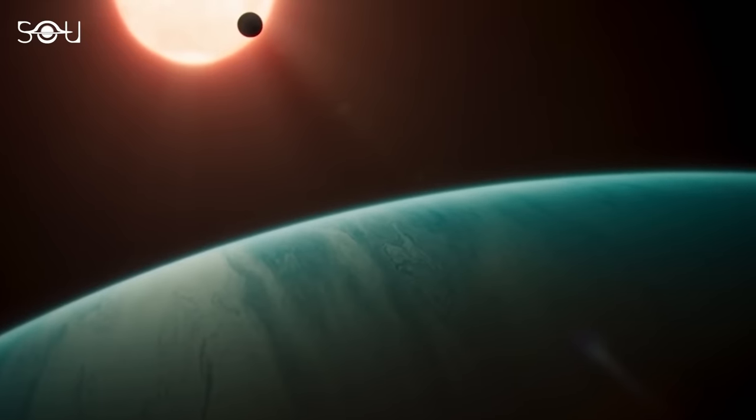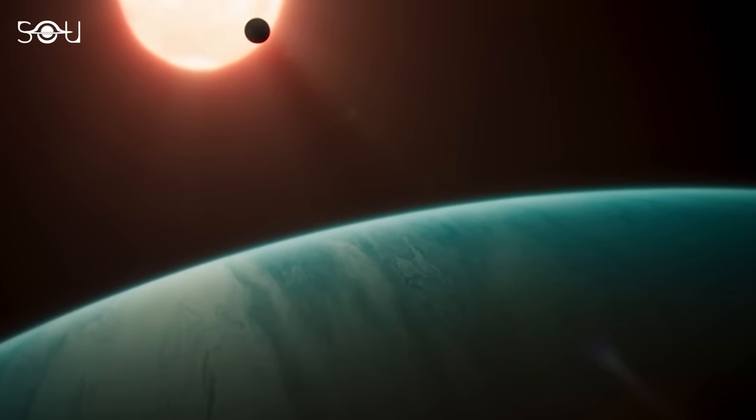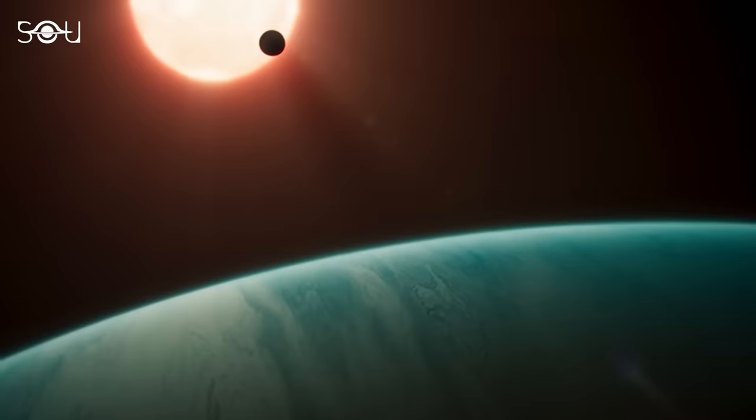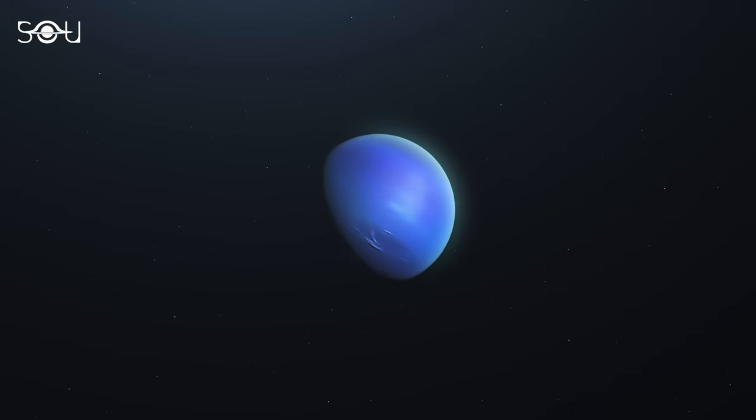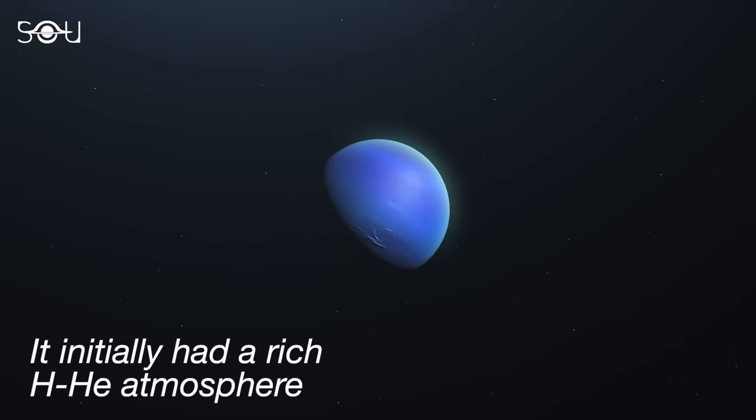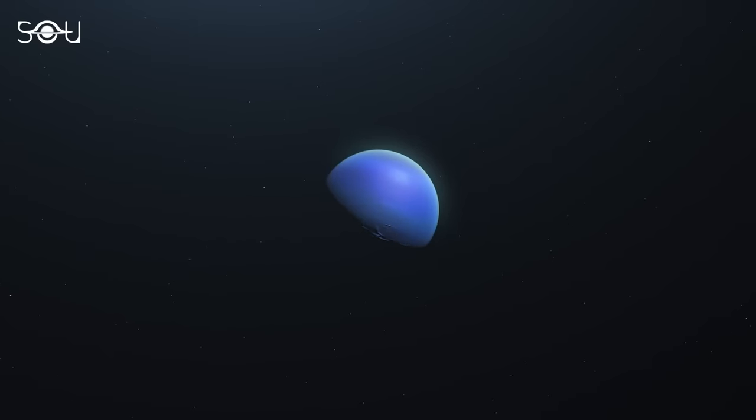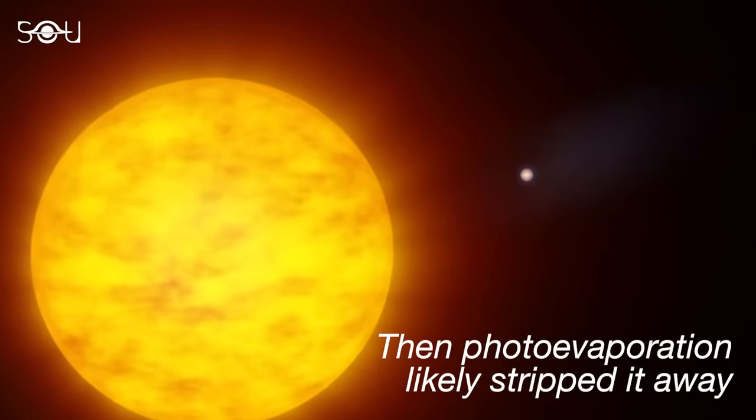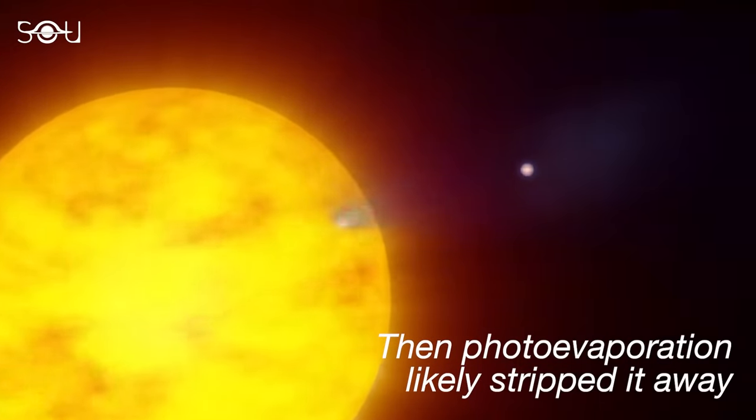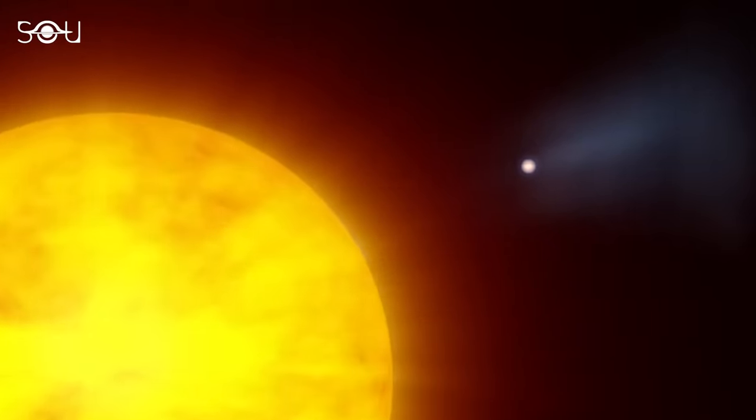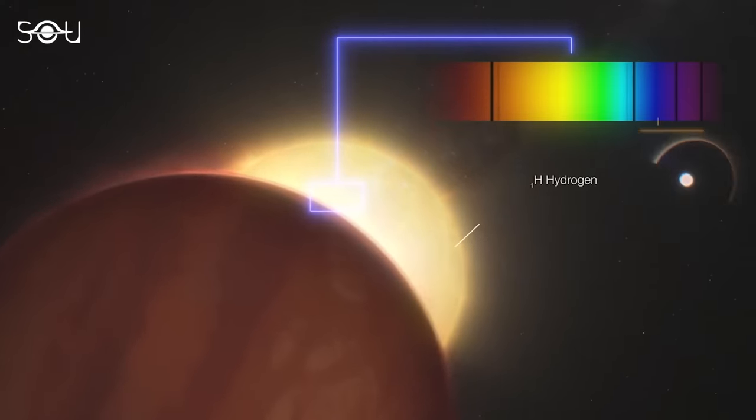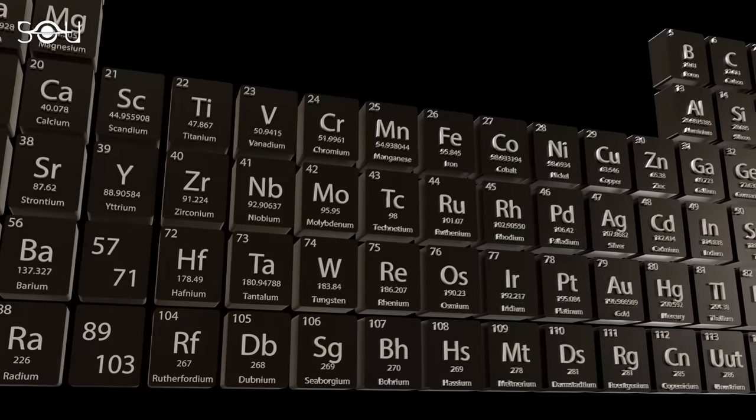The discovery has set the stage for some fascinating possibilities about the planet's composition, based primarily on its density. One hypothesis suggests that the exoplanet could have initially had a hydrogen-helium atmosphere similar to Neptune's. If this is the case, photoevaporation might have stripped away this primary atmosphere over time. This process, however, may have led to the reformation of a secondary atmosphere, primarily composed of heavier elements.